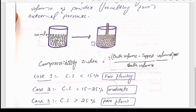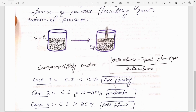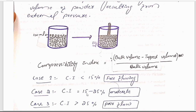From the compressibility index we can detect whether the powder has free-flowing, moderate, or poor flow property. The formula is: Compressibility Index = [(Bulk Volume − Tapped Volume) / Bulk Volume] × 100. If the value is less than 15%, the powder has free-flowing property. If the value is between 15% and 25%, the flow property is moderate. If the value is more than 25%, the powder has poor flow property.